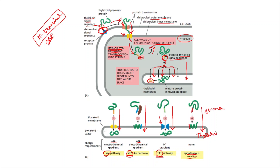These are the four different mechanisms by which protein can be translocated from the stroma into the thylakoid. One thing to remember: unlike mitochondrial proteins, which have only one signal sequence, chloroplast proteins have two signal sequences. The N-terminal signal sequence directs the protein into the stroma and is removed upon entry. The thylakoid signal sequence helps translocation from the stroma into the thylakoid and is removed only after that translocation. Two signal sequences help translocation within two different compartments of the organelle.